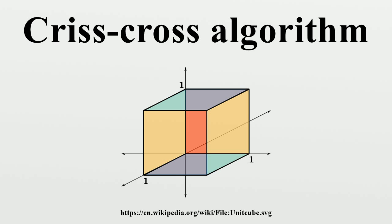The Criss-Cross algorithm is not a polynomial-time algorithm for linear programming. Both algorithms visit all 2D corners of a cube in dimension D, the so-called hypercube, in the worst case. However, when started at a random corner, the Criss-Cross algorithm on average visits only D additional corners. Thus, for the three-dimensional cube, the algorithm visits all eight corners in the worst case and exactly three additional corners on average.